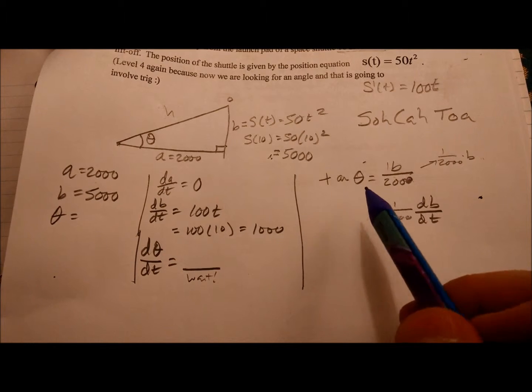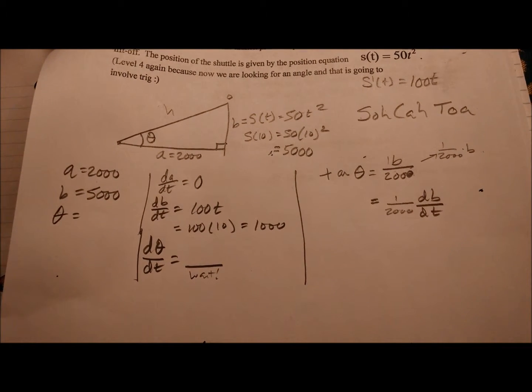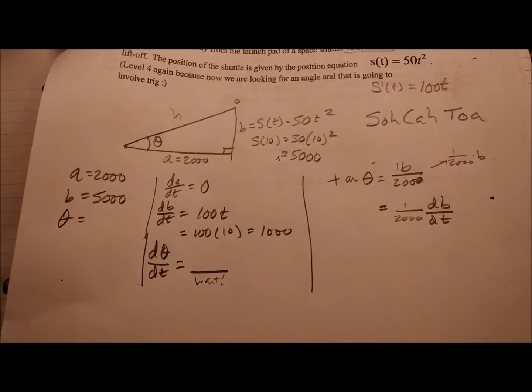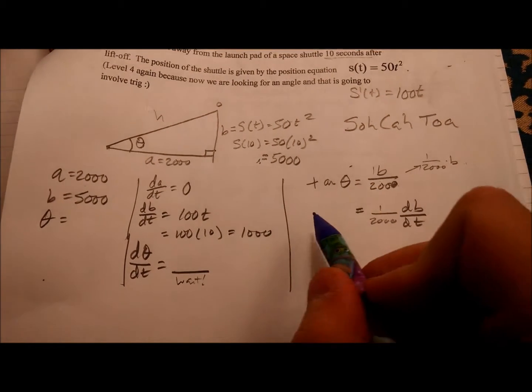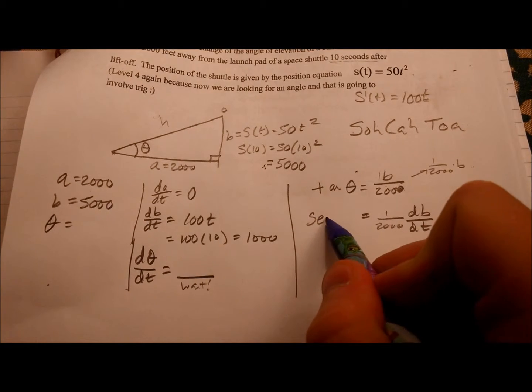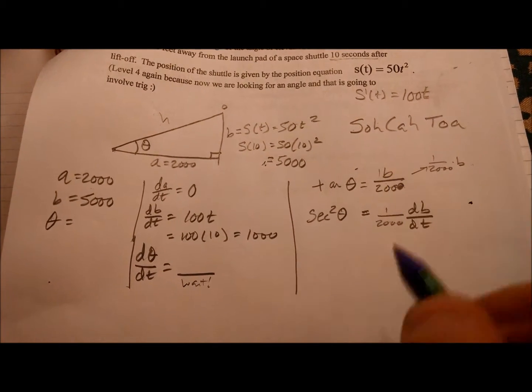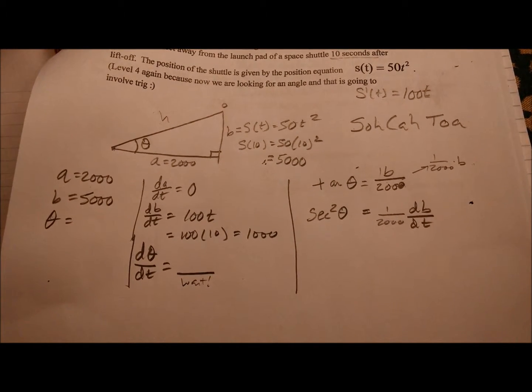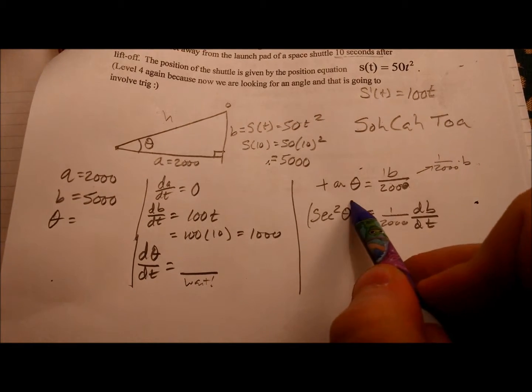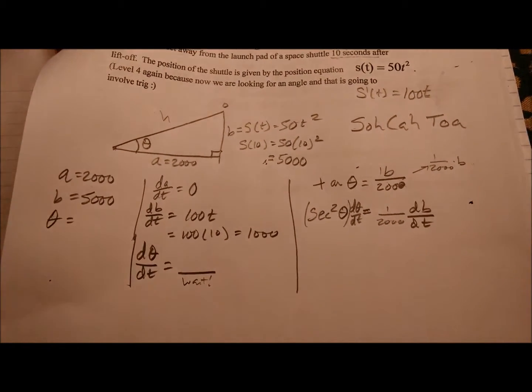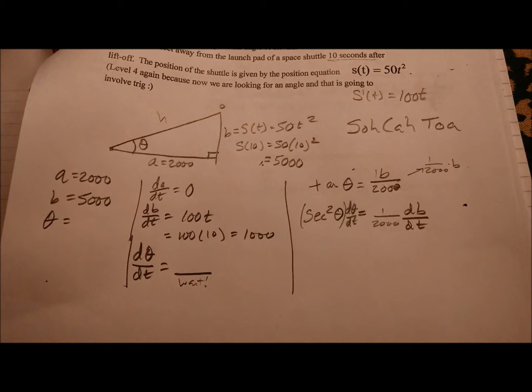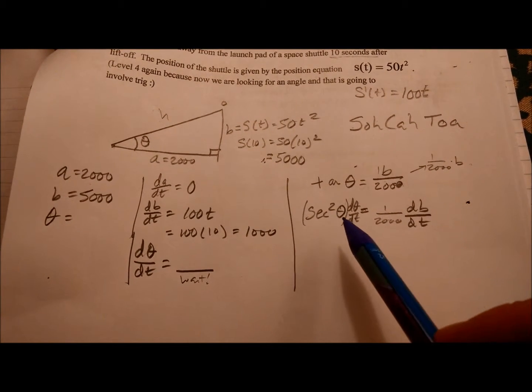Now the left-hand side, hey, what's the derivative of a tangent? You can't see me. I did like the—why am I—I'm making motions to—anyway. Secant squared theta. I wish it was just that, but because theta has a derivative, D theta DT.